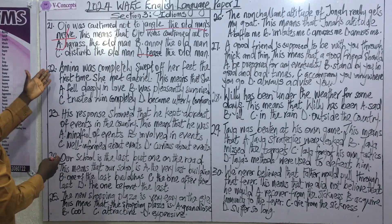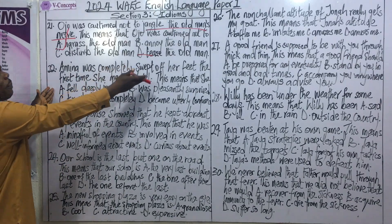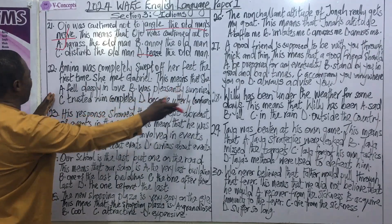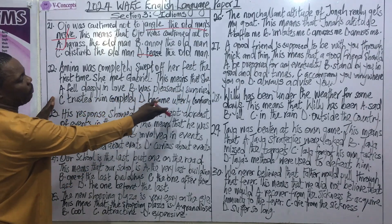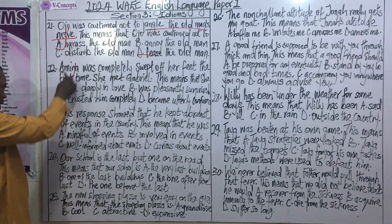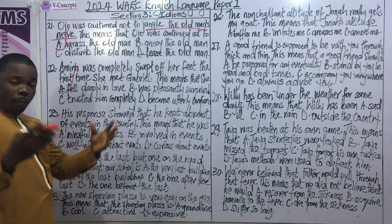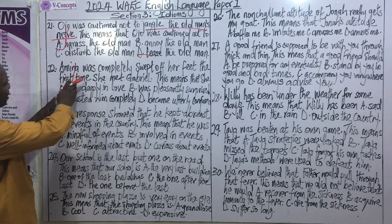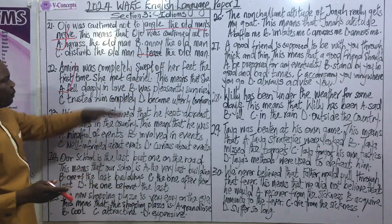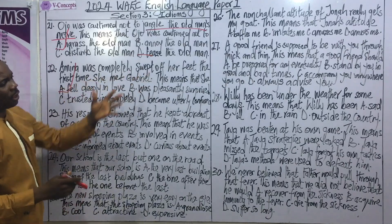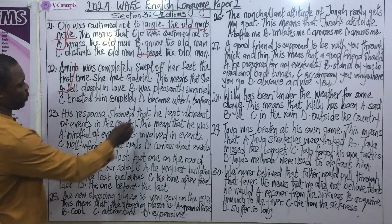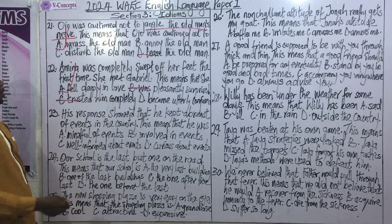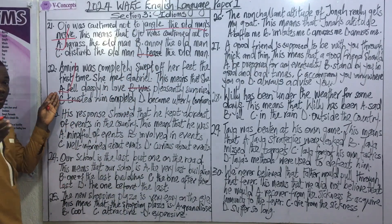Question 22: Amina was completely swept off her feet the first time she met Gabriel. This means that she: A) fell deeply in love, B) was pleasantly surprised, C) trusted him completely, D) became utterly confused. The correct answer is A — fell deeply in love. You can easily strike off B and C: 'swept off her feet' doesn't relate to being pleasantly surprised or trusting someone. The idiom means to fall deeply in love.